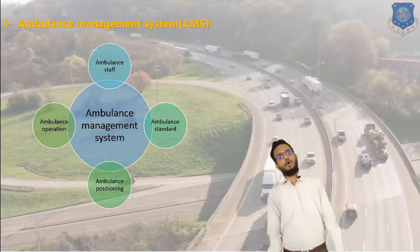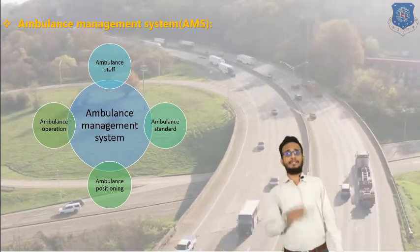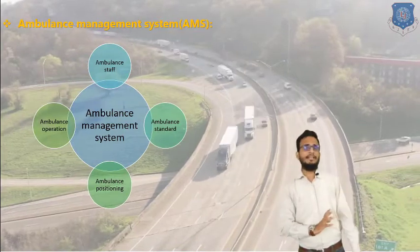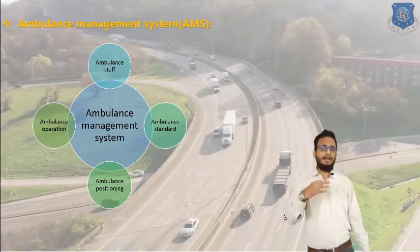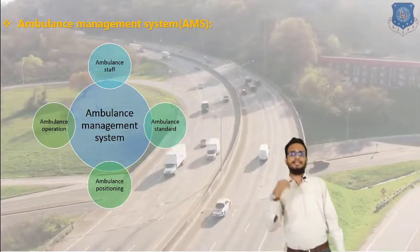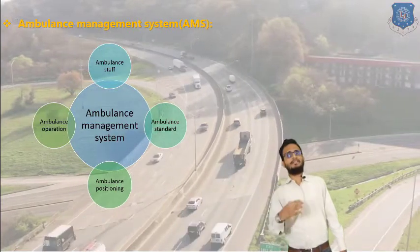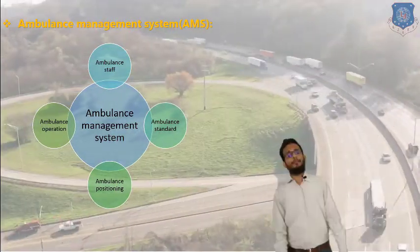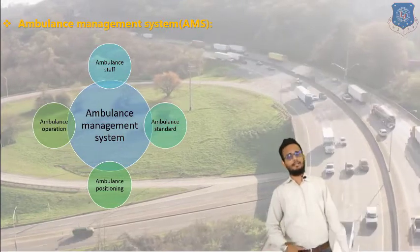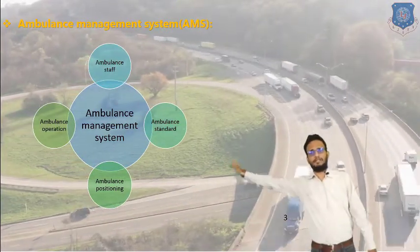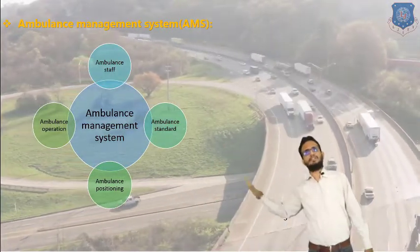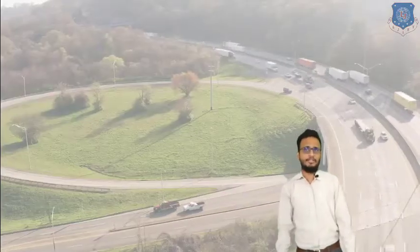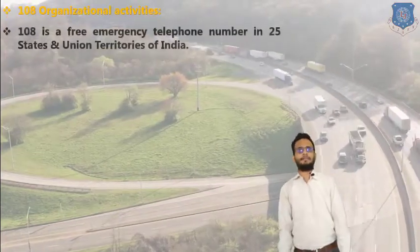The fourth pillar is ambulance operations. The ambulance operational system is based on reach, sense, and care principles. There are mainly three operations: reach, sense, and care. These are the basic three operations of the ambulance management system. So the four pillars are staff, standards, positioning, and operations.